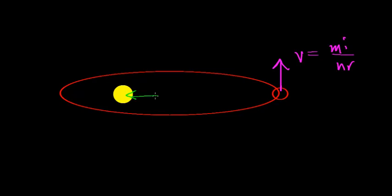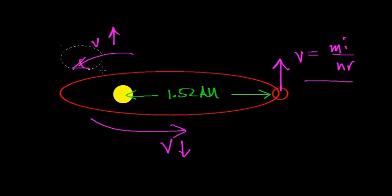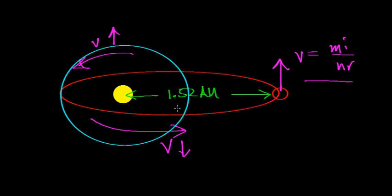We can look up the average distance between the Sun and Mars, which is 1.52 astronomical units. As Mars gets closer to the Sun, its velocity increases, and as it moves away, the velocity decreases. So what we're really looking for is the average velocity. To make an order-of-magnitude calculation, we'll assume the orbit of Mars is circular, which simplifies our calculations.